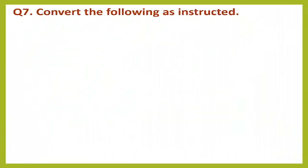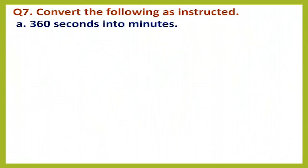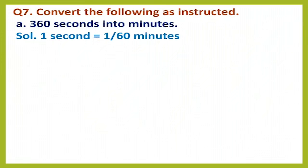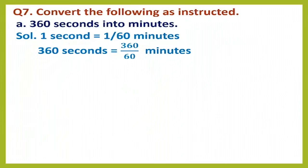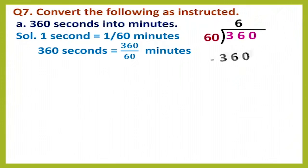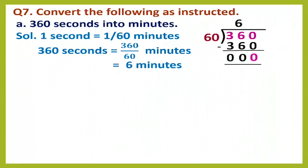Question number 7 — convert the following. Question A: convert 360 seconds into minutes. One second equals 1/60 minutes, so 360 seconds = 360 ÷ 60 minutes. Dividing: 60 × 6 = 360, subtract to get zero. The quotient is 6, so 360 seconds equals 6 minutes.